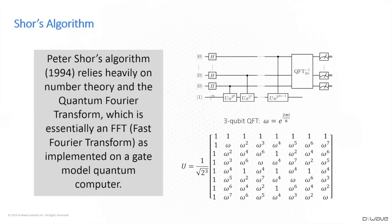So Peter Shor showed that using a little number theory and a fairly simple circuit for a gate model quantum computer, you can factor quickly and efficiently. This was a dramatic discovery. It really energized the field because it said this abstract computational device — remember, in 1994 nobody had built a quantum computer — if we could build it, we could solve factoring.